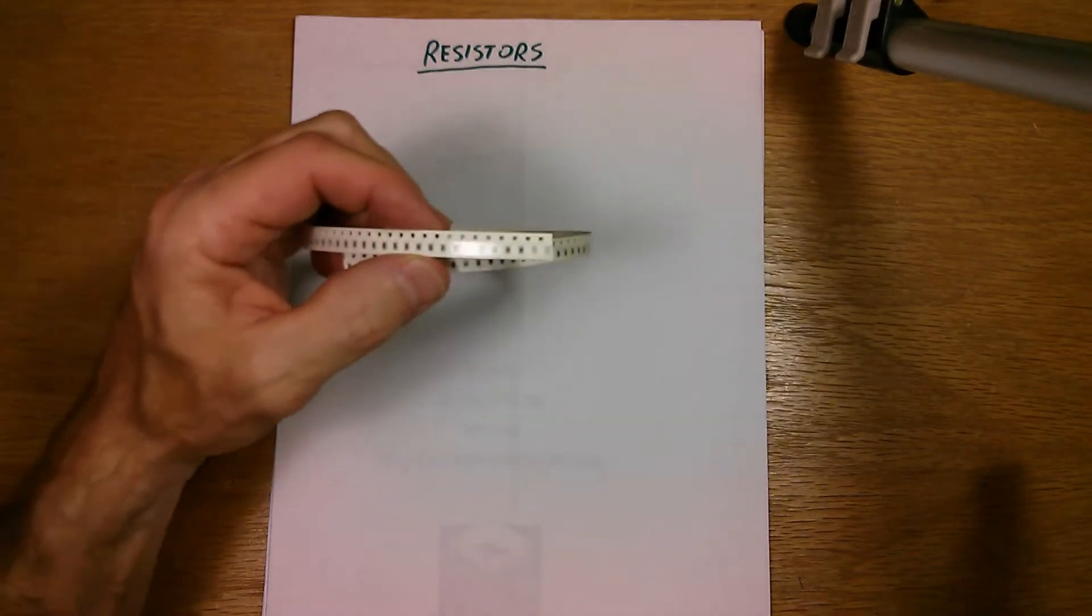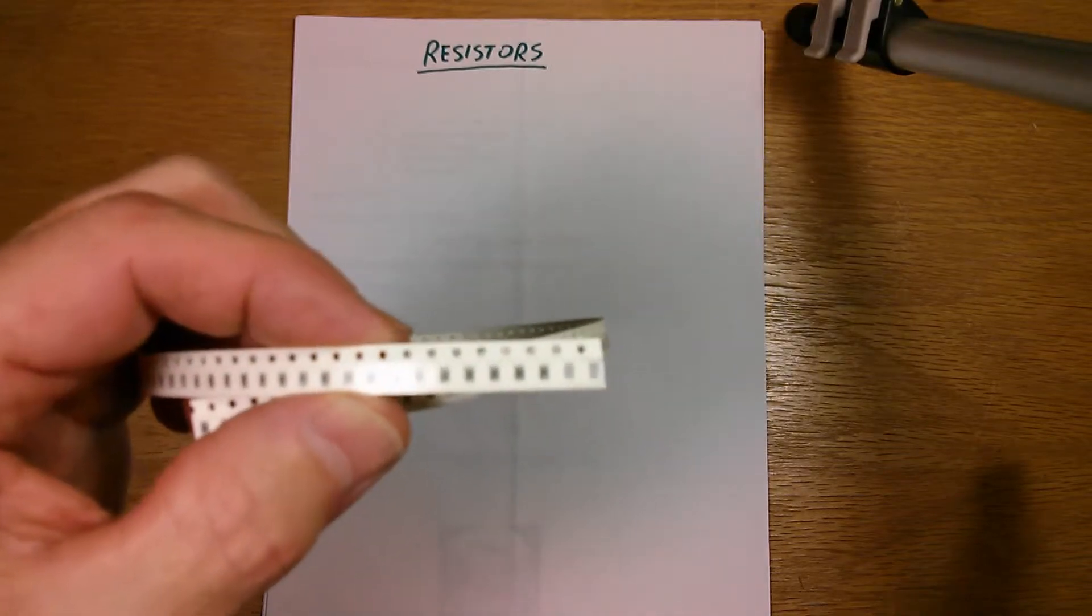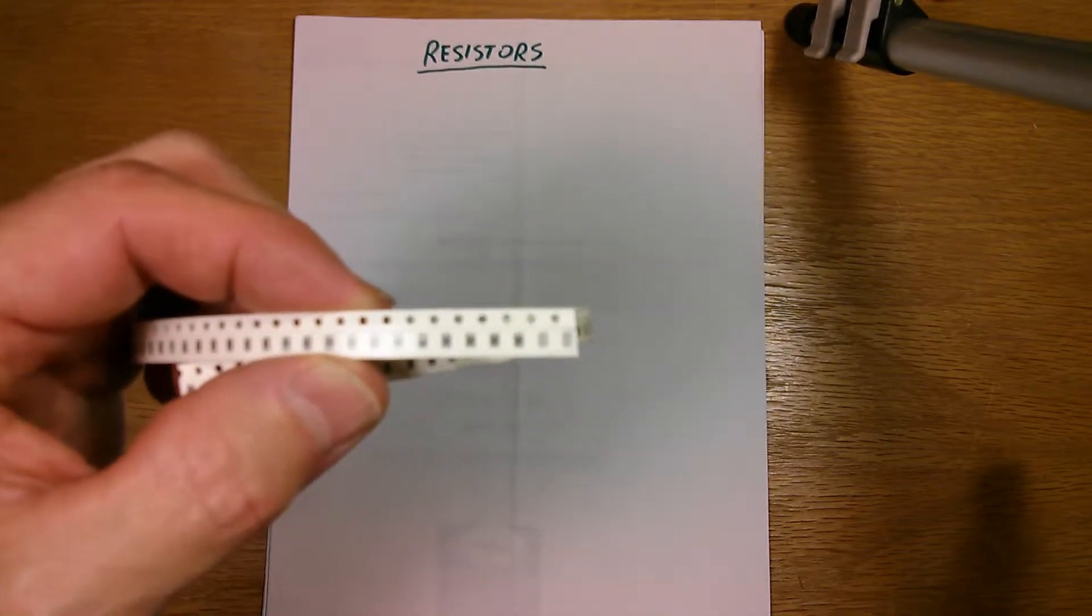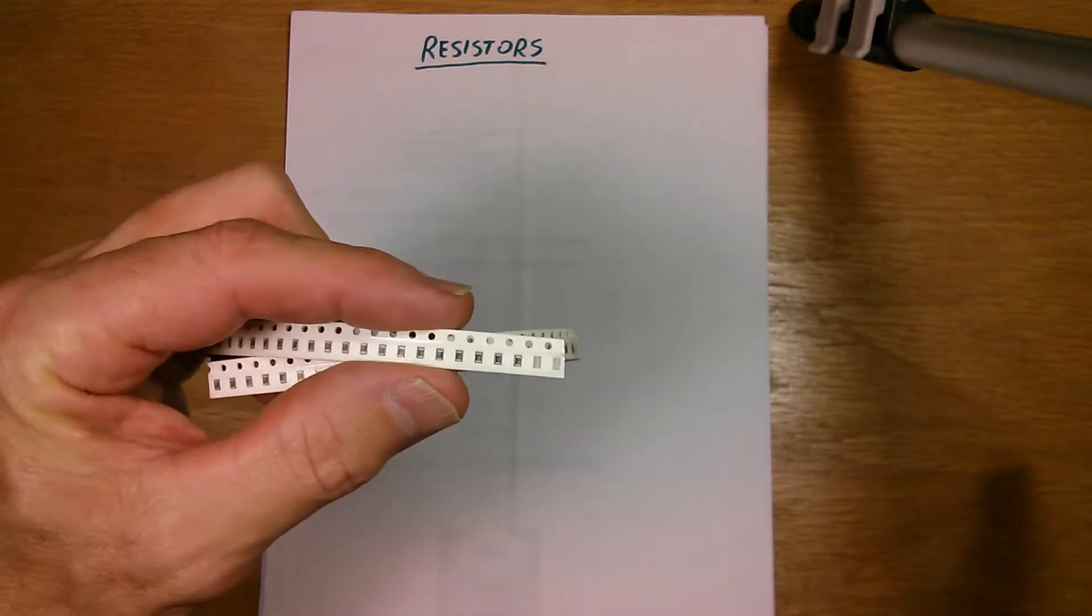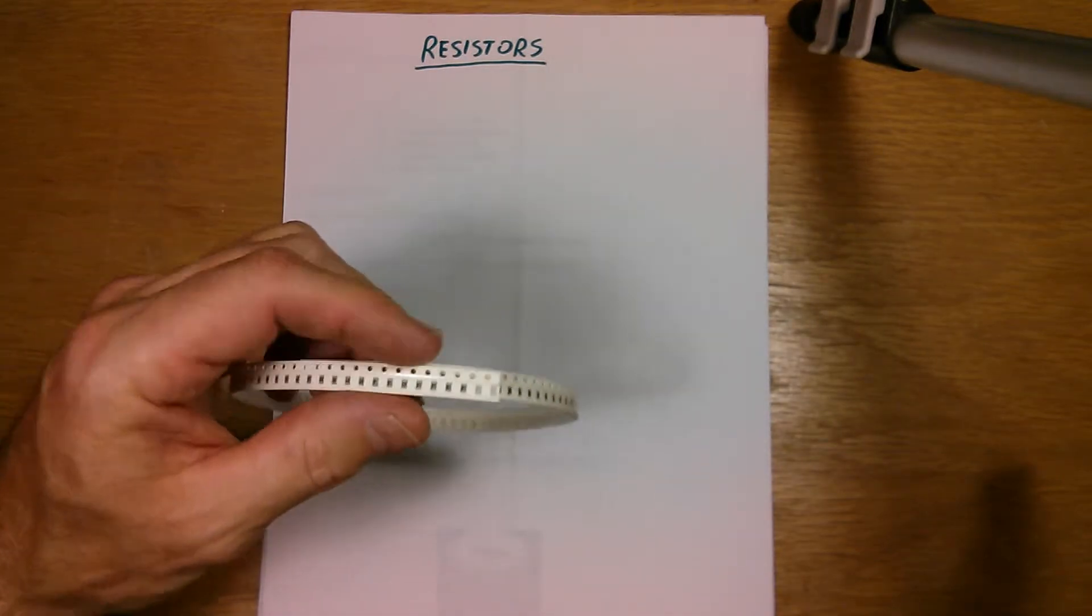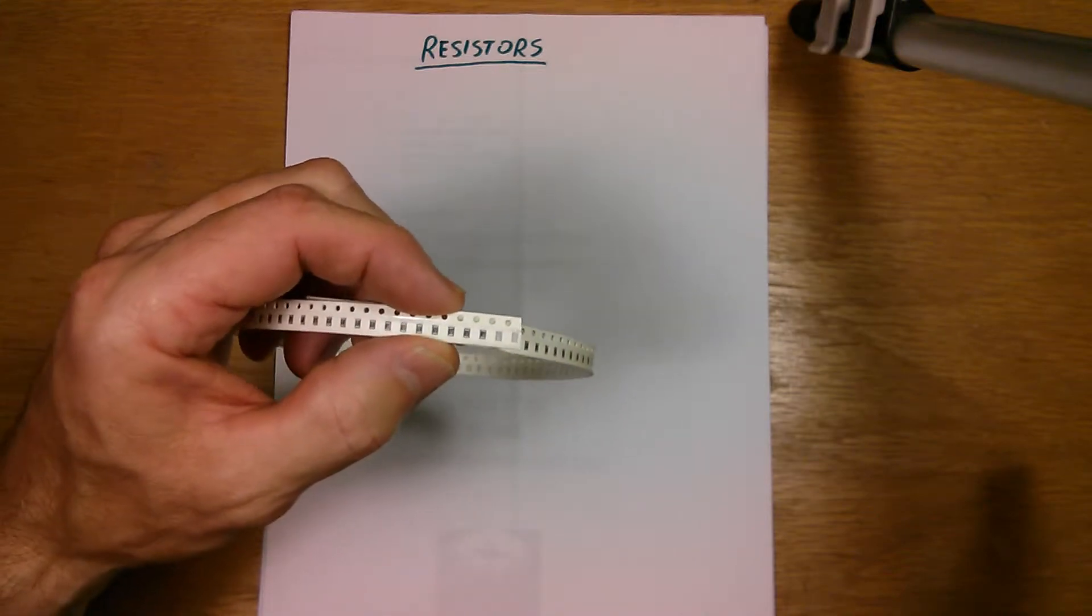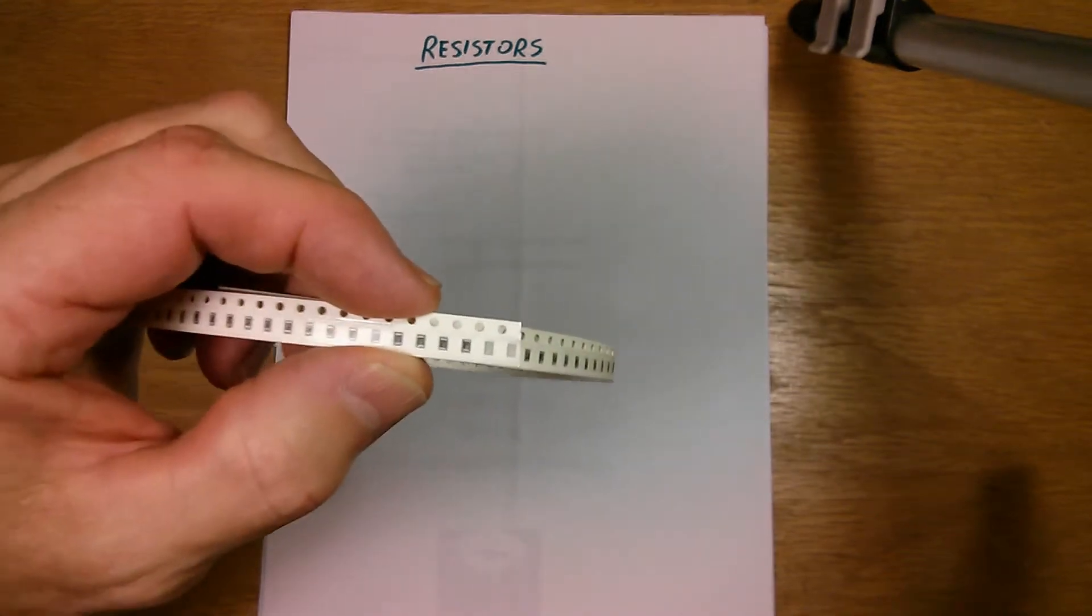The opposite end of the scale are these surface mount resistors. I don't know how clearly you can see that, but just in relation to the size of my hand, you can see how tiny these are. And this is where the world is going these days in electronics, it's all surface mount parts.